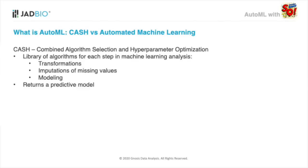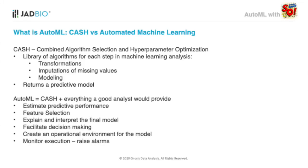However, to me, Auto ML should be much, much more. It should not just return a model — this is not all a user needs. Auto ML should return estimates of what predictive performance to expect from the model, perform feature selection, help interpreting and explaining the final model, help the user make decisions, put the model into an operational environment, monitor its execution, raise alarms when predictions start to go off, and much more. It should provide everything a good analyst would provide.